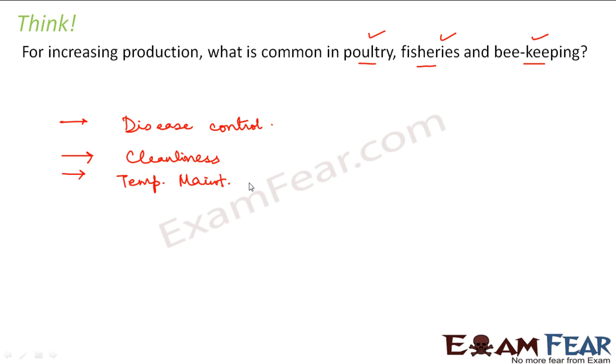The nectar which was watery gets converted into a viscous honey by the process of evaporation. And for evaporation, you need a specific temperature. Temperature cannot be very high. It cannot be very cold. So you need a specific temperature. So the temperature maintenance needs to be there in beekeeping as well.